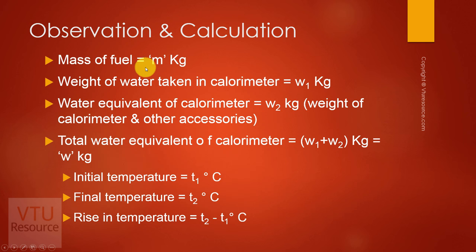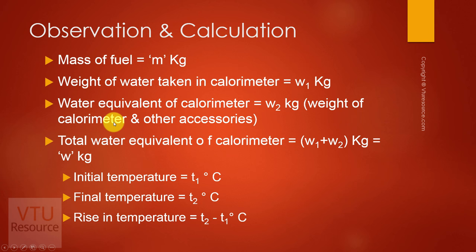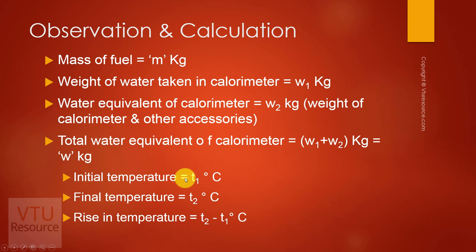The mass of fuel sample is considered to be m kg. The weight of water taken in the calorimeter is W1 kg. The water equivalent of the calorimeter — meaning the weight of the calorimeter and other accessories — is W2 kg. Therefore, the total water equivalent is W1 plus W2 kg. Initial temperature is T1 degree Celsius and final temperature is T2 degree Celsius.